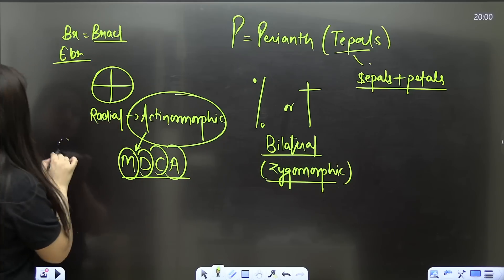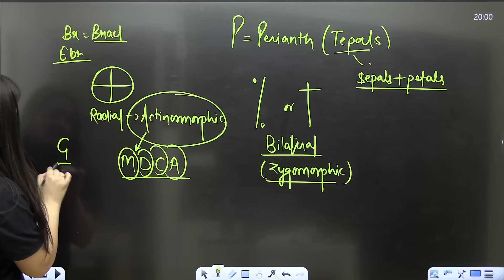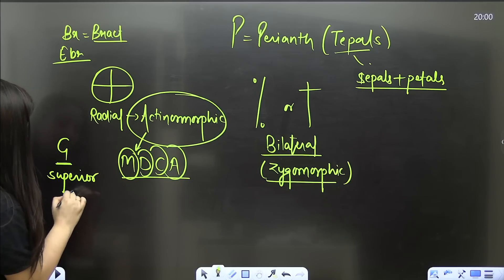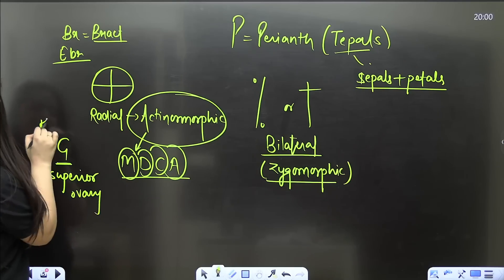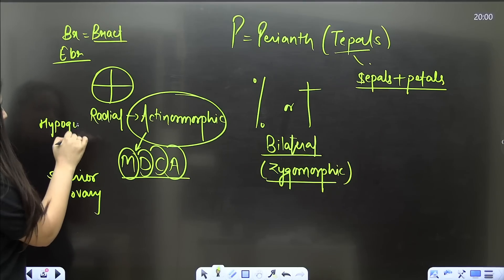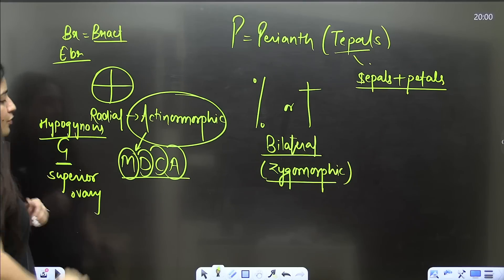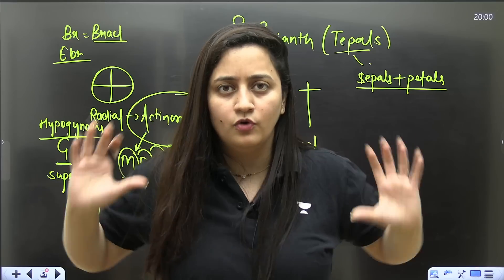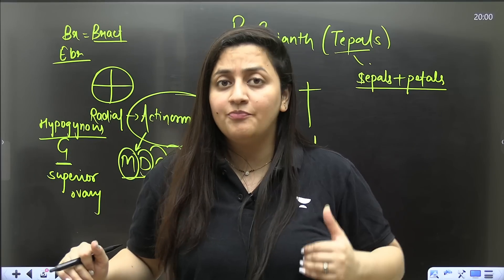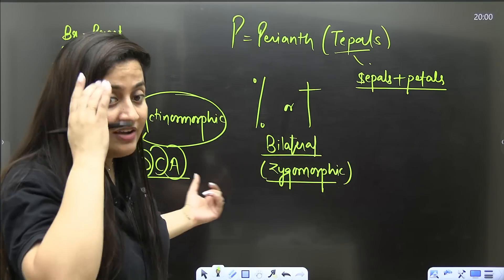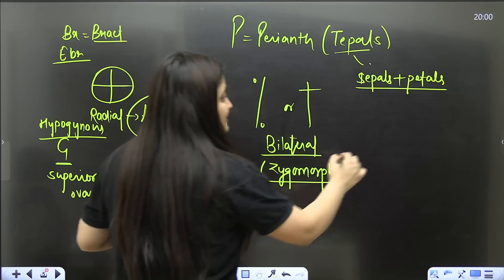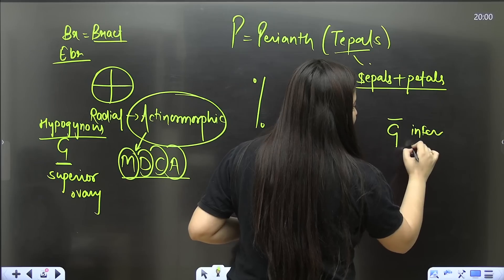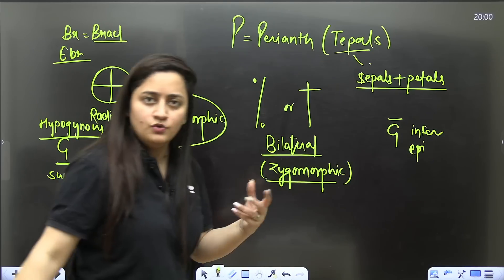If G is written with a line below it, it means superior ovary and the flower is hypogynous — the ovary is above all other floral appendages, so degree of protection is less. If G is written with a line above it, it means inferior ovary and the flower is epigynous.